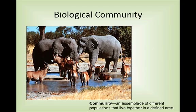A biological community is an assemblage of different populations that live together in a defined area. Notice that both population and biological community rely on it being in a specific area. This community is a watering hole in Africa. You can see that we have multiple different organisms — the elephants, the gazelles, there's probably crocodiles in the water, there could be lions back in the bushes. That's all part of this ecological community.